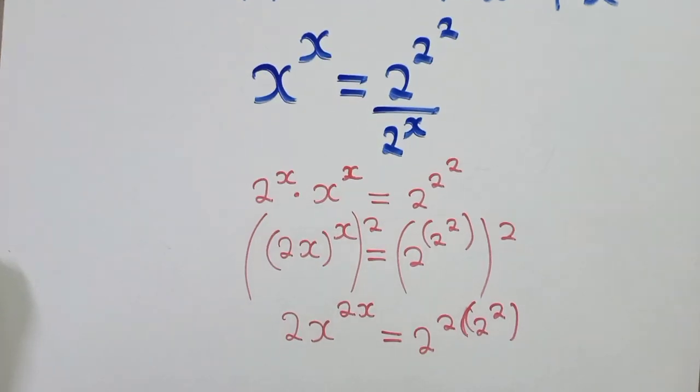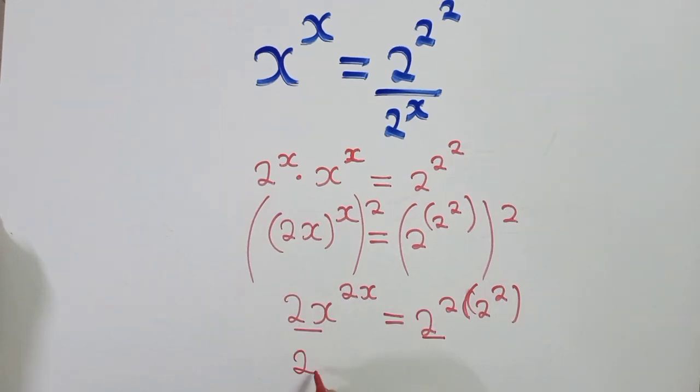Okay, so now from this stage, if you're able to see this and this, laws of indices, the powers are similar to the bases. So we can say 2x is equal to 2 power 2, like that. So now it's easier to solve.